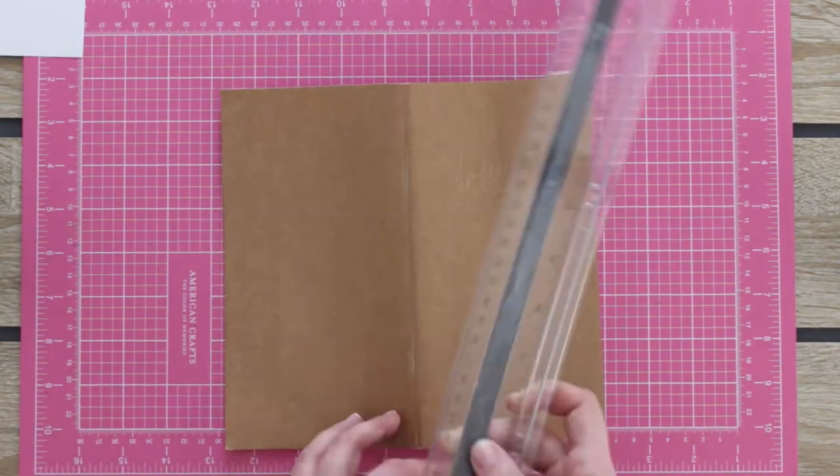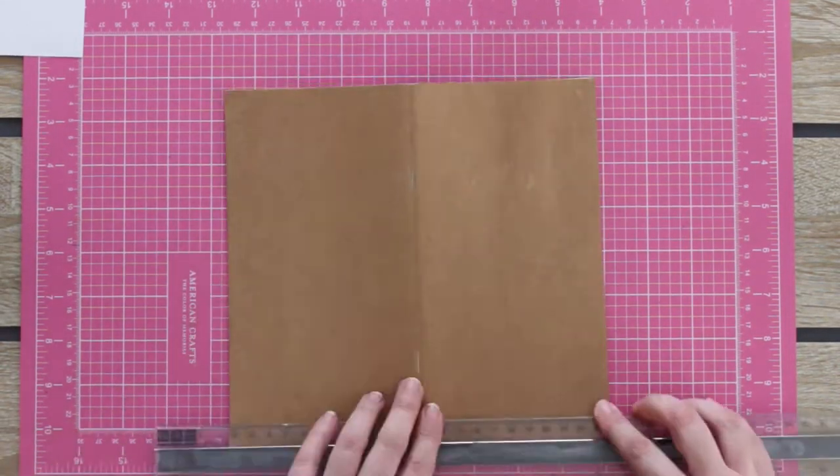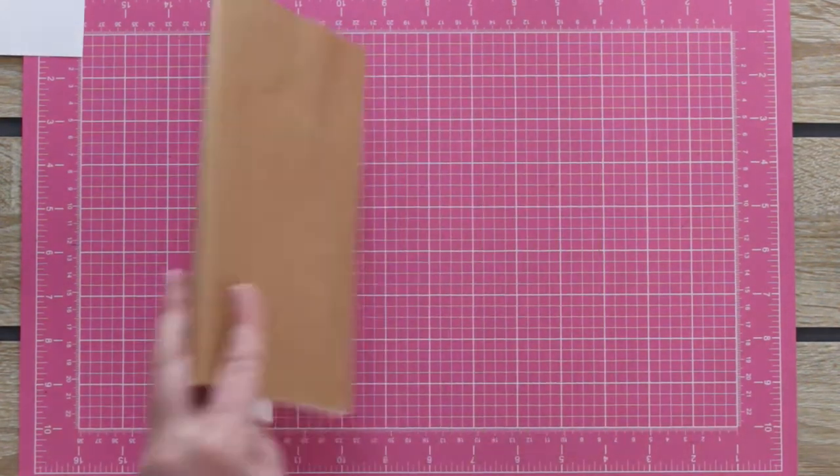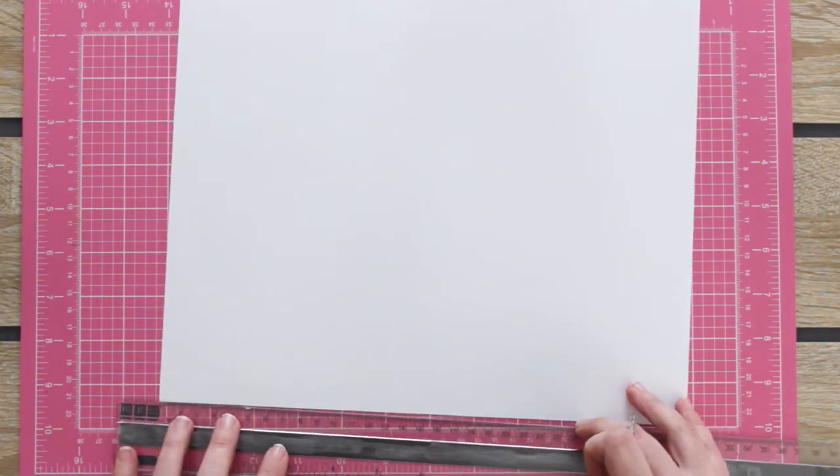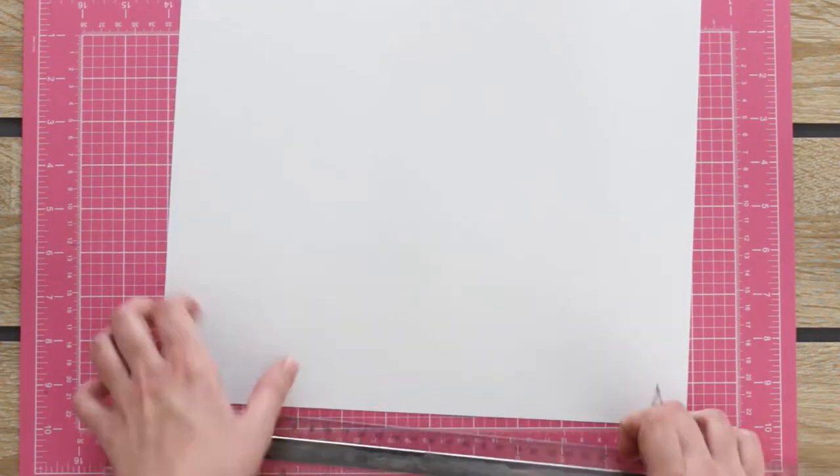The first thing you need to do is to measure the cover or look for the size online. Mine is 22 x 21 cm. Cut the cover in the desired size.